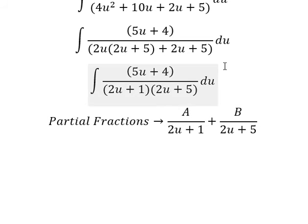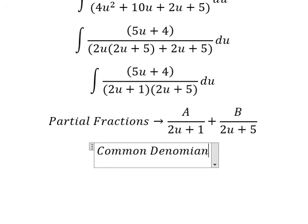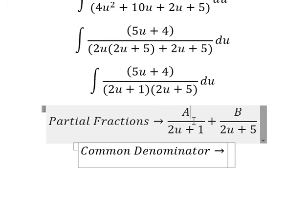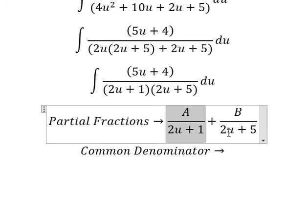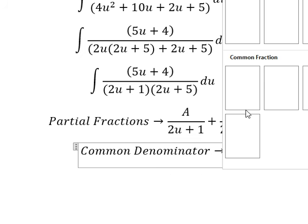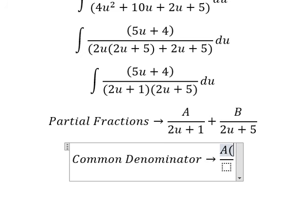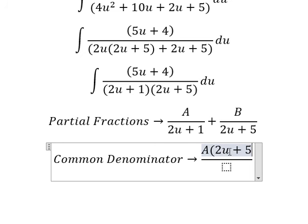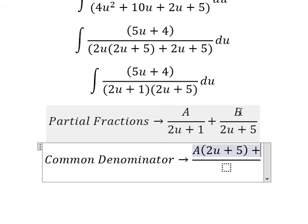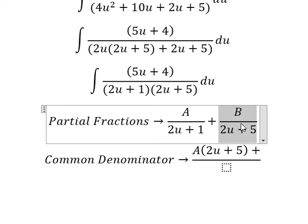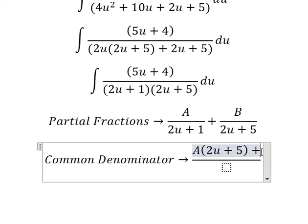Next we do common denominator. This one is missing 2u plus 5, so capital A will multiply by 2u plus 5. This one is missing 2u plus 1.